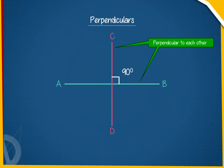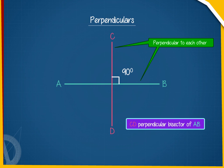If one such line segment bisects the other at a right angle, the line segment is called the perpendicular bisector of the other.